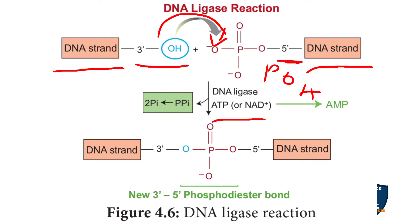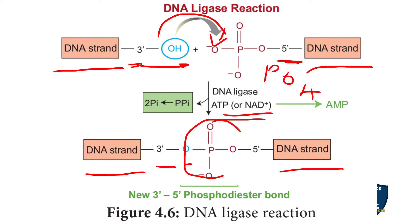After the ligase is added, you can see the DNA strands joined. The 3'-OH end and the 5'-PO4 end come together — the H is released with the help of ATP — forming a 3'-5' phosphodiester bond. So by joining with the help of DNA ligase, you get a 3'-5' phosphodiester bond. This is the reaction of DNA ligase enzyme.